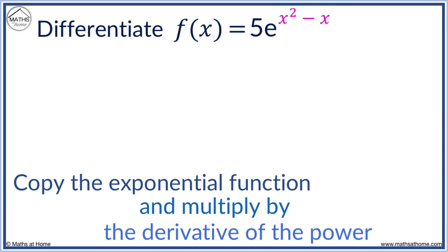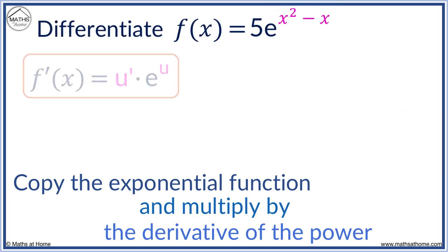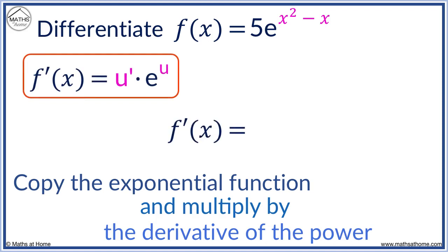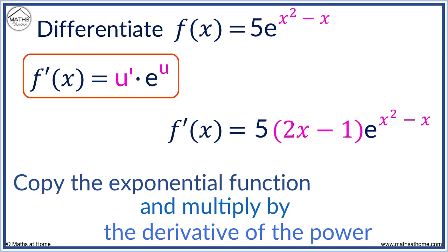Differentiate 5e to the x squared minus x. We copy 5e to the x squared minus x. We can write a gap between the 5 and the exponential. In this gap, we'll put the derivative of x squared minus x, which is 2x minus 1.